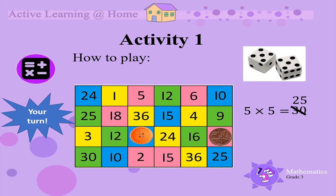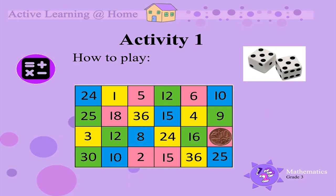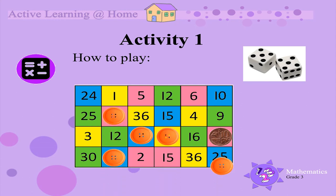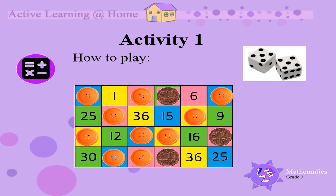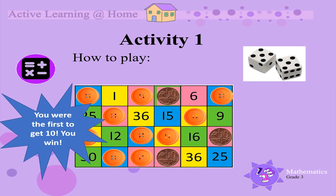If you make a mistake, you must remove one of your counters. You and your parent must keep taking turns, rolling the dice, multiplying the numbers together, and placing your counters on the board. The first person to have 10 counters on the board is the winner. You were the first to get 10, therefore you win.